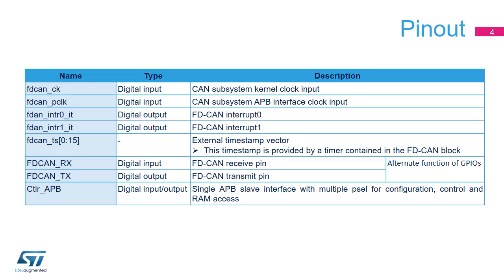Two clocks are provided to the FDCAN unit: FDCAN-CK, the kernel clock used to obtain the bitrate, and FDCAN-PCLK, which is the APB clock used to access memory-mapped registers and message RAM. Two interrupt outputs enable the FDCAN unit to report events to the Cortex-M33 processor. An external 16-bit timestamp input port can be used by the FDCAN unit to timestamp the transmission or reception of a message; this timestamp is provided by a timer contained in the FDCAN block. FDCAN-RX and FDCAN-TX have to be connected to the transceiver. Finally, the APB slave interface is internally split in three parts, each having a dedicated chip select: configuration, control and RAM access.